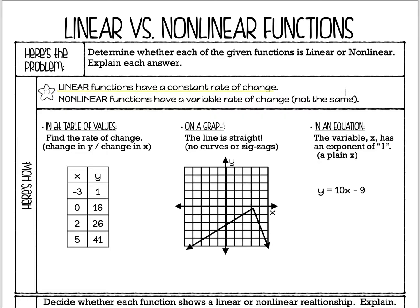If you save $50 one week, then $25 the next week, then $75 the next week, that's a variable rate of change — that's not constant. So that would be nonlinear. A variable rate of change just means it's not the same thing over and over again. Now we're going to check whether these relationships are linear or nonlinear.